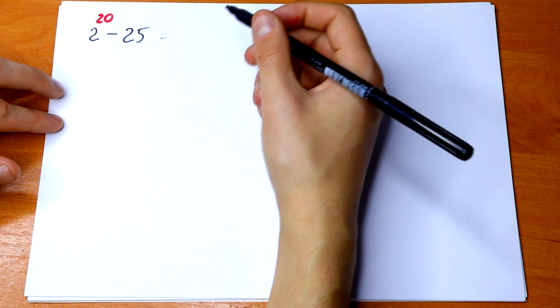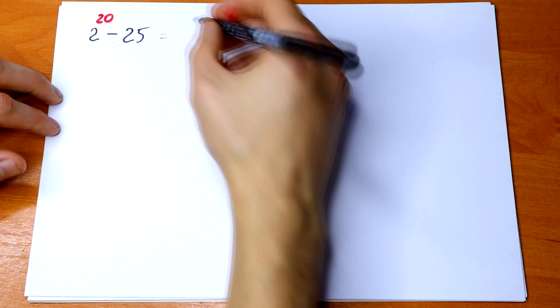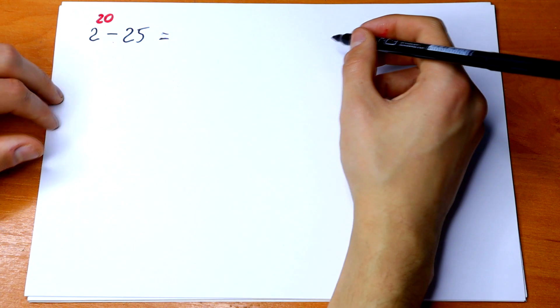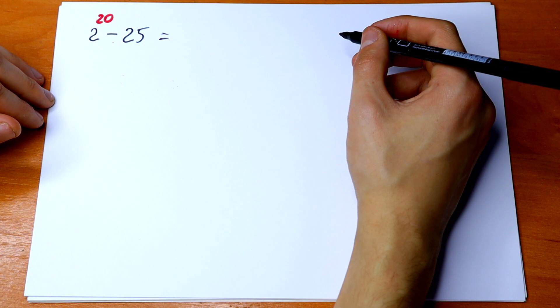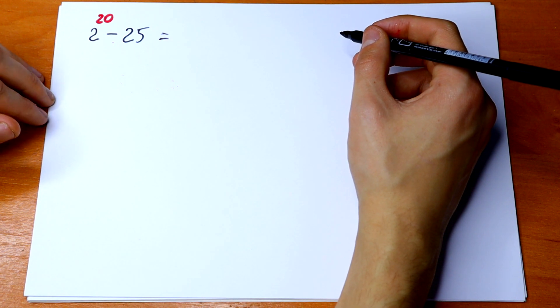2 to the 20th power minus 25. For sure we can calculate this with our telephone, but let's remember or let's learn some algebra rules, exponential rules, power rules. So let's start it.